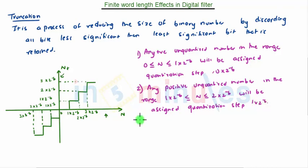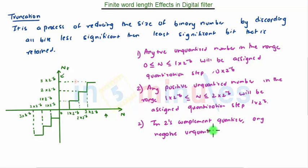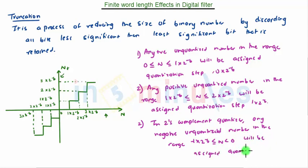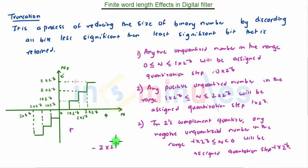Similarly, in the 2's complement quantizer, any negative unquantized number in the range −1×2^(−b) to 0 will be assigned quantization step −1×2^(−b). This can be seen in the graph. Any negative unquantized number in the range −2×2^(−b) to −1×2^(−b) will be assigned the quantization step −2×2^(−b).